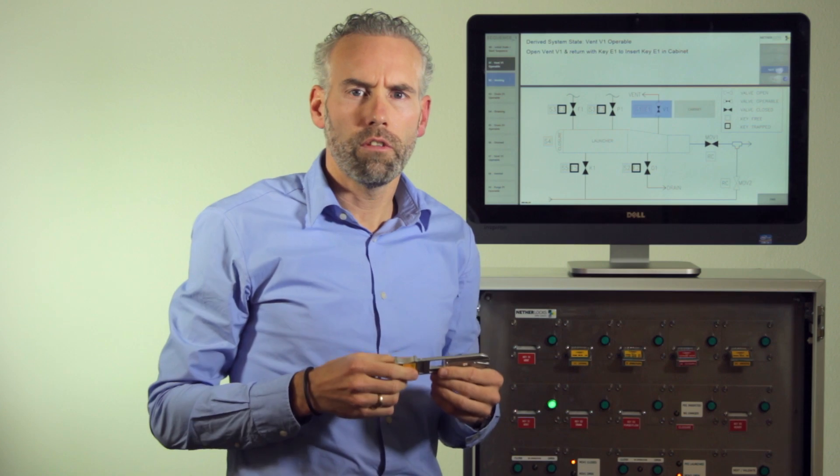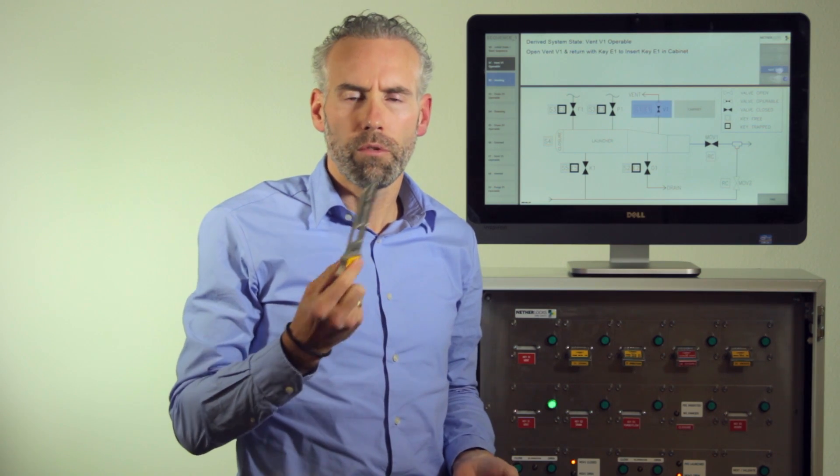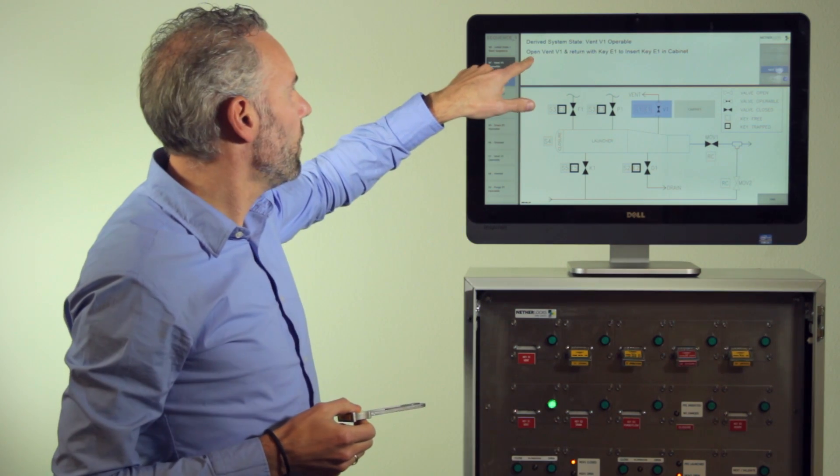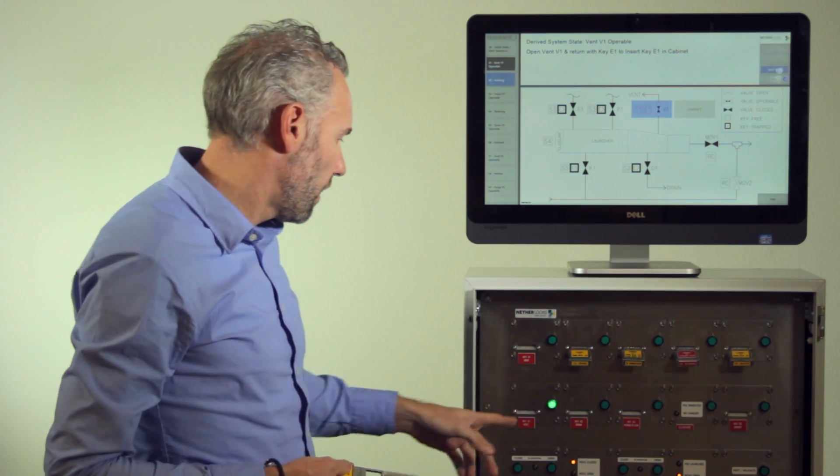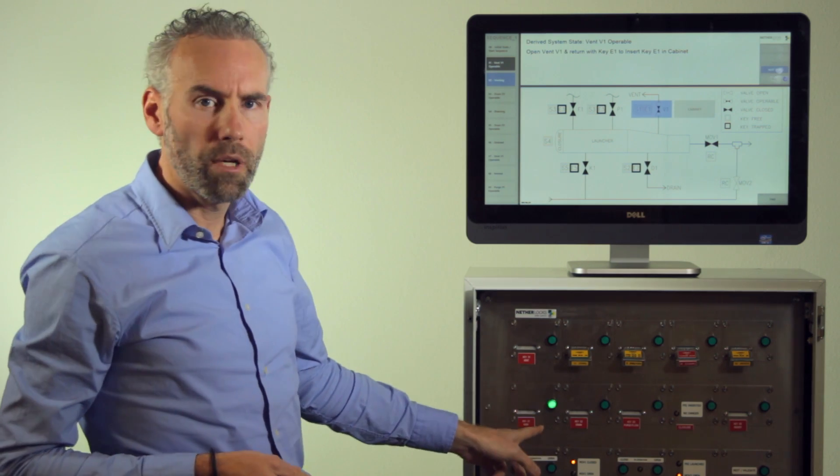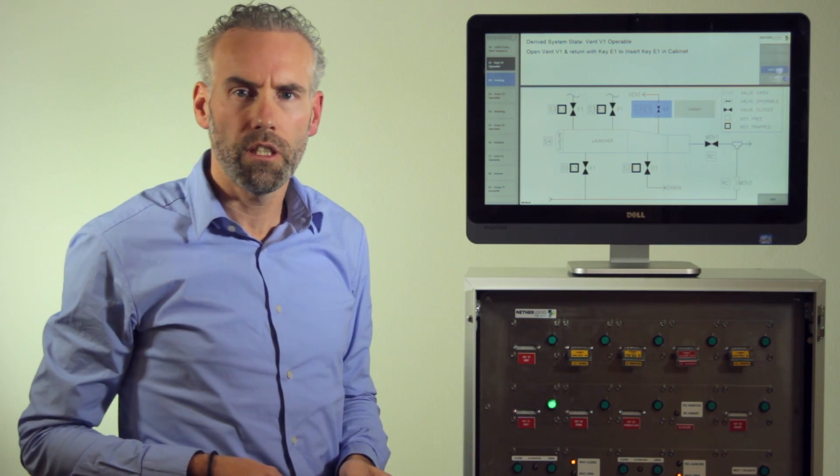I have now opened the vent valve and returned with the designated key. The screen says I had to open the vent valve and return with key E1 which is the key I have taken from the vent valve. At the same time the cabinet light blinks and this is the position where I need to return the key.